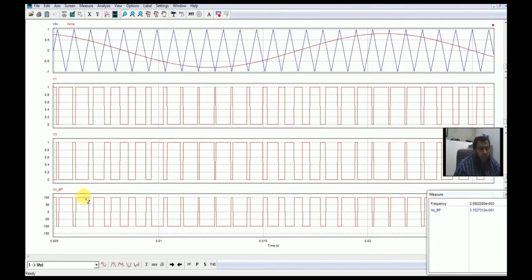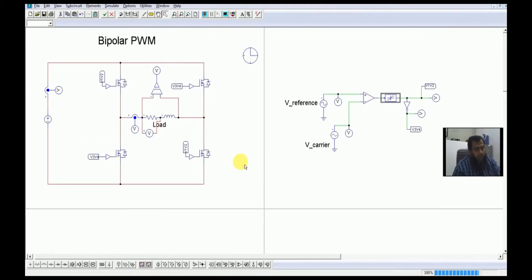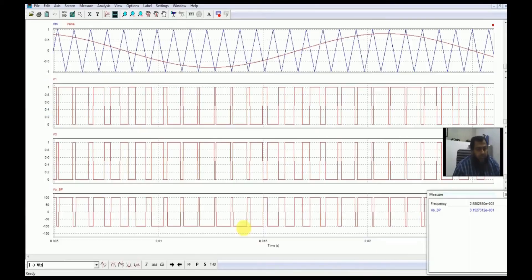Because V1 is high, the voltage is set to be equal to 100 volts. When this sine wave is less than this triangular waveform, then V1 and V2, which are these two switches, are turned off. Consequently, we are having the other two switches on and we get minus 100 volts here.